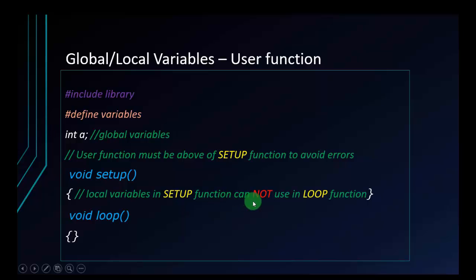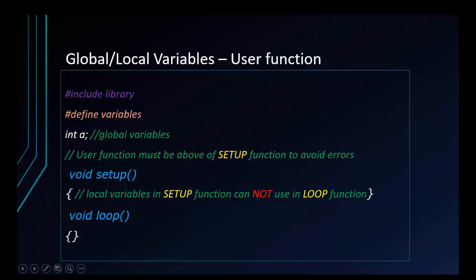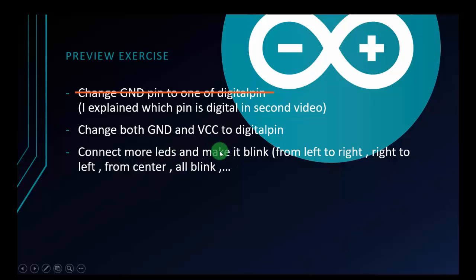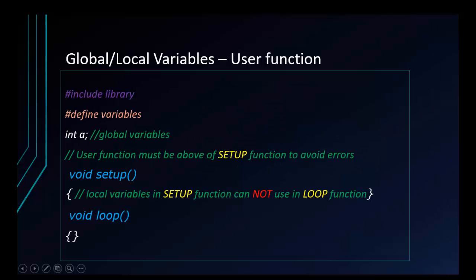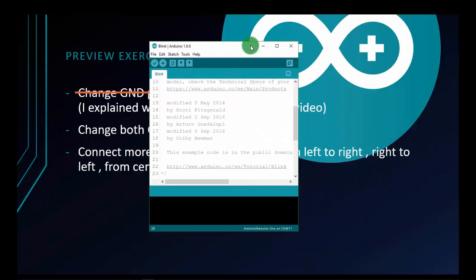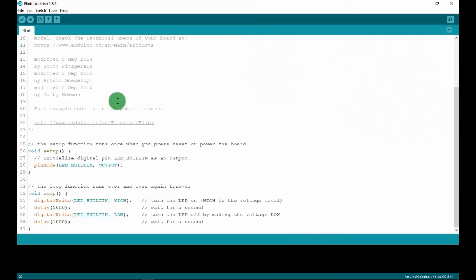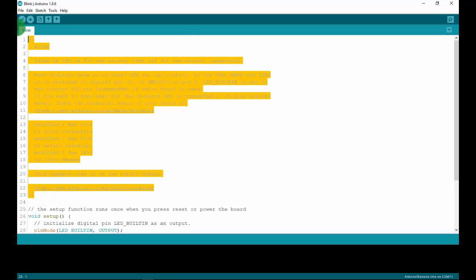A local variable declared in the setup function cannot be used in the loop function. If you want to use a local variable, you need to declare it inside the specific function you want. That's everything we need to know before we start. First, I will explain the blink project again and then fix some issues from the previous video.